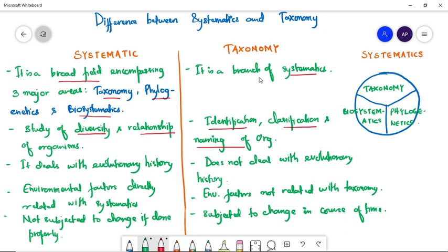Systematics deals with evolutionary history since it studies the relationship of organisms, while taxonomy does not deal with the evolutionary history of organisms.